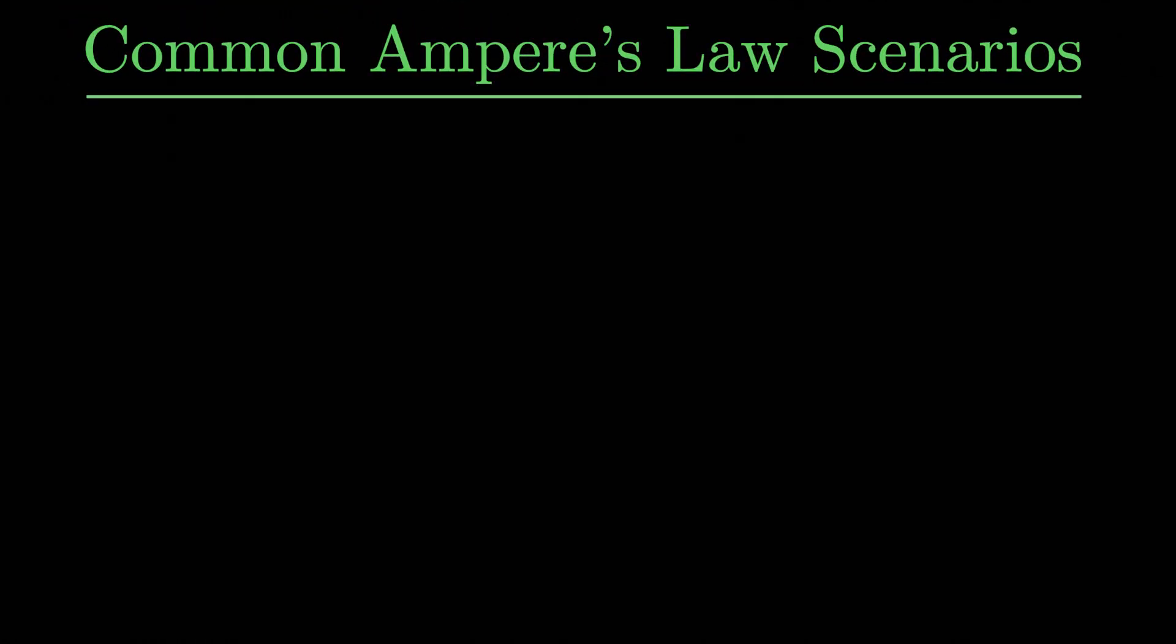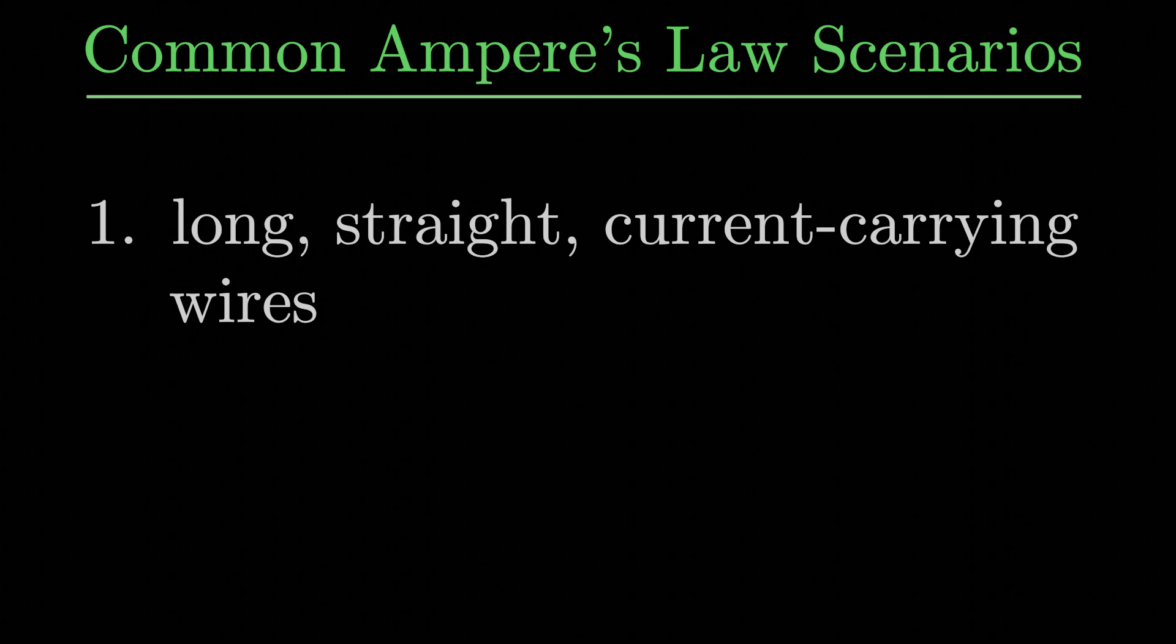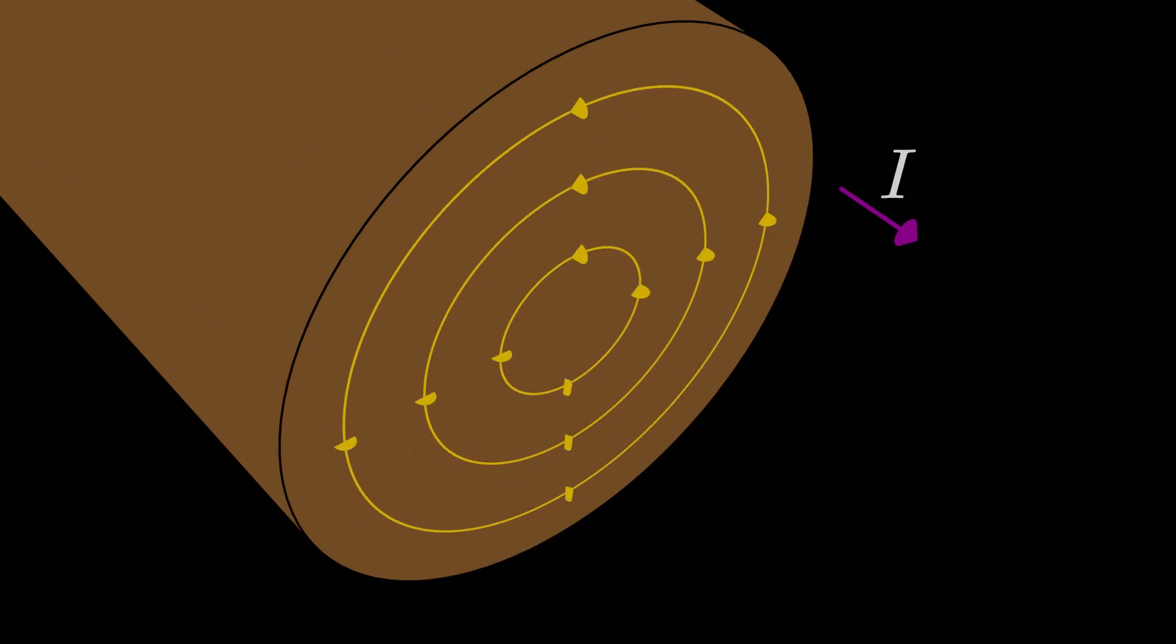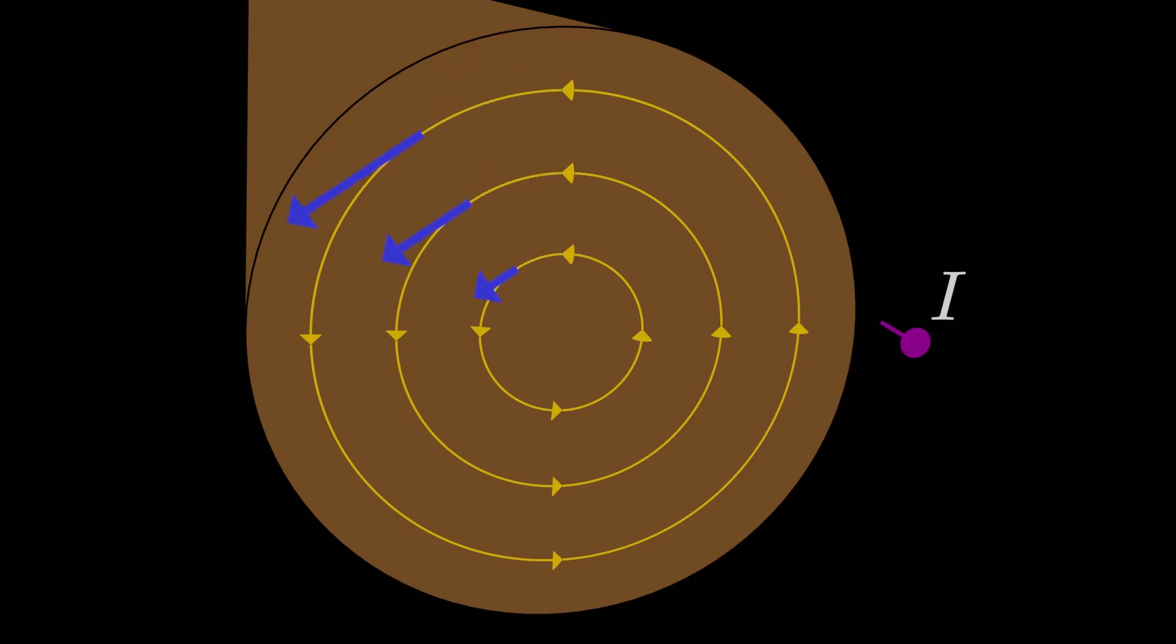With that out of the way, there are three common scenarios at the intro physics level for which using Ampere's law is pretty useful. The first scenario is, well, the one we just did, a long straight current carrying wire. We found the magnetic field outside the wire, but it's common to ask about the magnetic field inside the wire as well, and this is actually the associated exercise for this lesson. Given the wire has uniform current density, what's the magnetic field inside a current carrying wire? The magnetic field lines still curl around the inside of the wire like they do outside, and for a given radius, the magnitude of the magnetic field is the same by symmetry. It's one of the most common Ampere's law type questions that I've seen asked at the intro physics level.